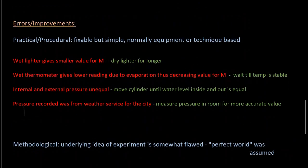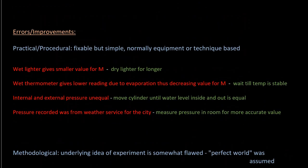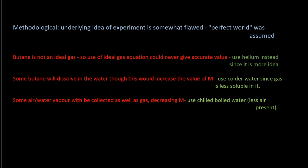There are two sorts of errors and improvements. The IB much prefers the methodological ones - that's where the higher grades are. The practical or procedural ones are simpler fixes: clean your equipment, get more accurate equipment, use more experiments to get an average, and remove random error. So there are four improvements there.